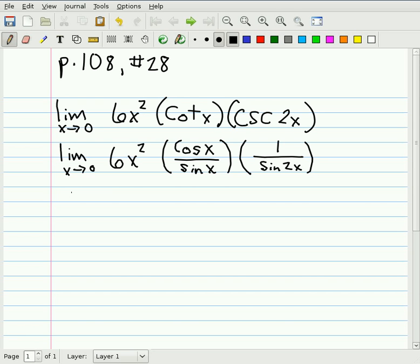With a little clever factoring of 6x squared into 3 times 2 times x times x, and then rewriting the quotient cosine x over sine of x as cosine of x times 1 over sine of x.